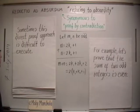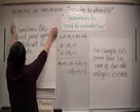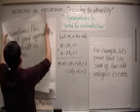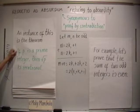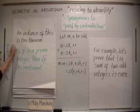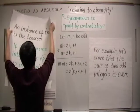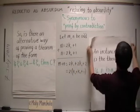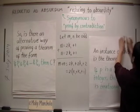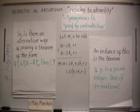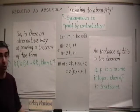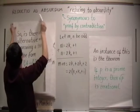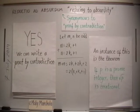Sometimes this direct proof approach is difficult to execute. An instance of this is the theorem: if p is a prime integer, then the square root of p is irrational. So is there an alternative way of proving a theorem of this form? Yes, we can write a proof by contradiction.